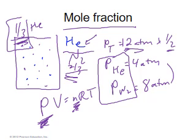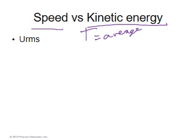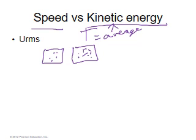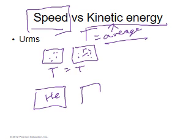Now let's look at the difference between speed and kinetic energy. From kinetic molecular theory, temperature is directly proportional to the average kinetic energy. So if you have two containers with two different gases at the same temperature, they will have the same average kinetic energy. That doesn't necessarily mean the molecules are moving at the same speed. For example, helium and nitrogen at the same temperature have the same average kinetic energy,